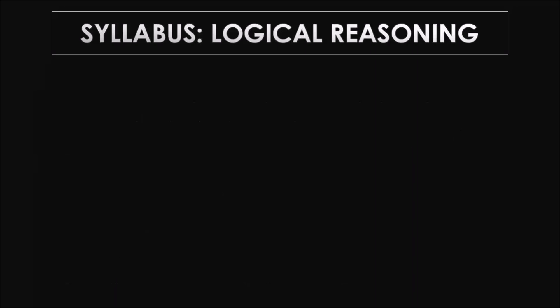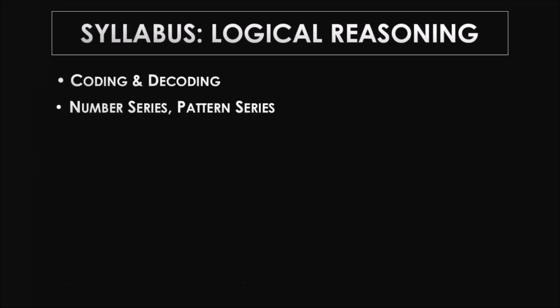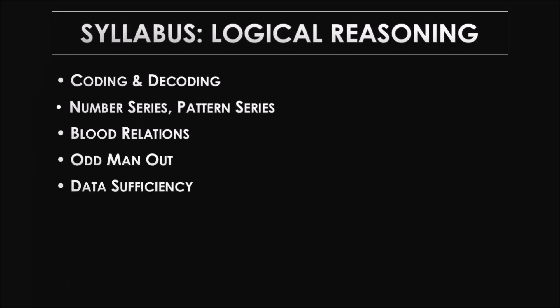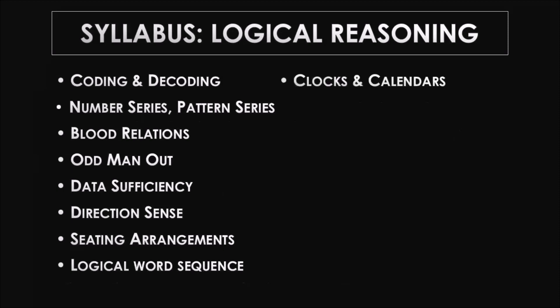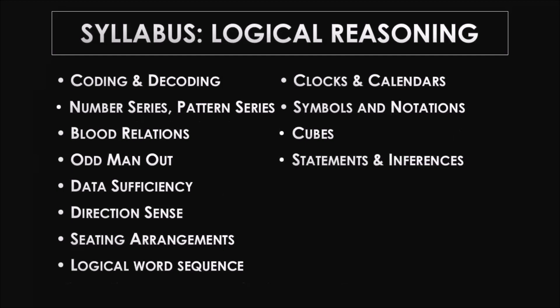Now let's move on to logical reasoning. Topics include: coding and decoding, number series, pattern series, blood relations, odd man out, data sufficiency, direction sense, seating arrangements — including linear and circular arrangement — logical word sequence, clocks and calendars, symbols and notations, cubes, statements and inferences, and inequalities.